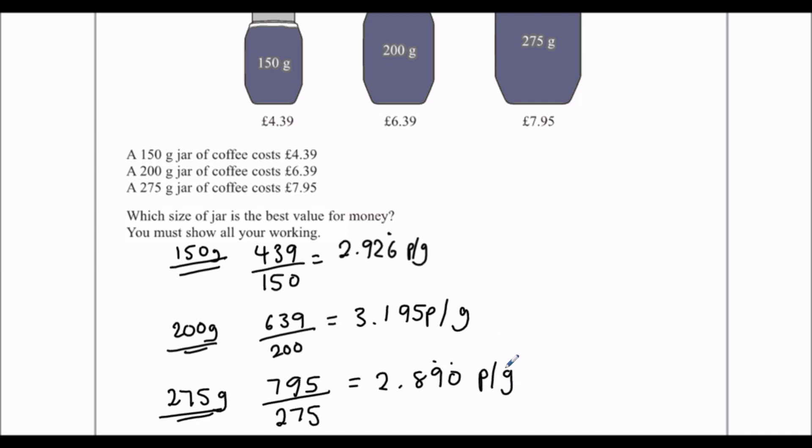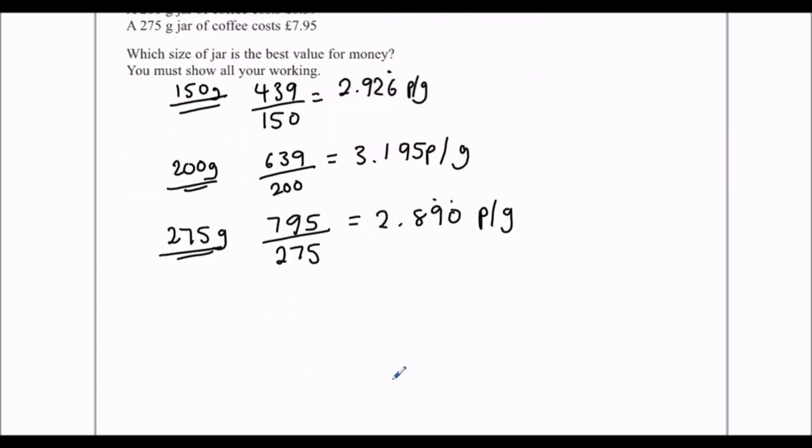So we want to pay the least amount per gram. The lowest amount per gram is this one, the 275 gram jar. So we just write it down, the 275 gram jar is the best value for money.